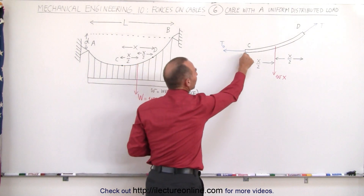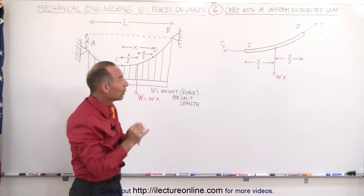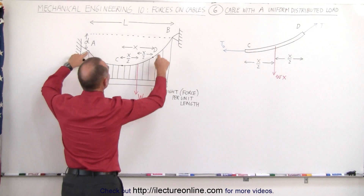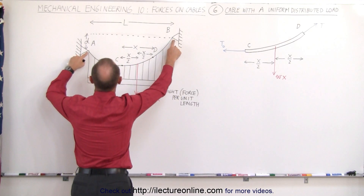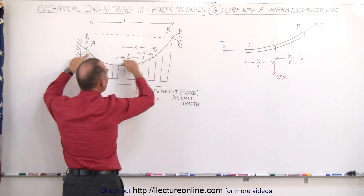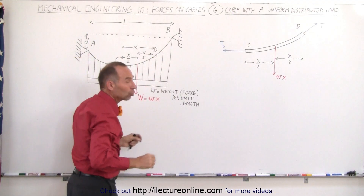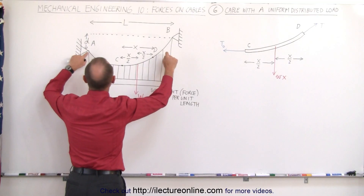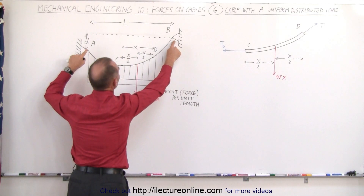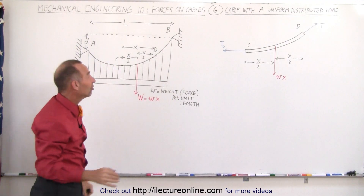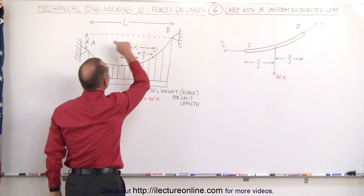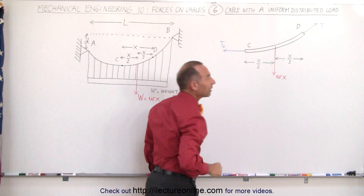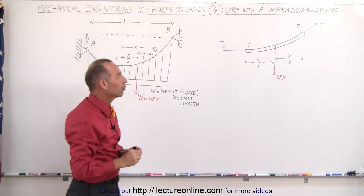Why do we always pick the point at the bottom of the cable? Because the only tension component there is the horizontal tension component, which equals the horizontal component of the reactionary force at A and B. The tension in the X direction is the same everywhere through the cable and equals the X components of the reactionary forces at A and B. Therefore, since we can easily calculate the reactionary forces at A and B, we can also easily calculate T0 on that section of the cable. That becomes our reference point.